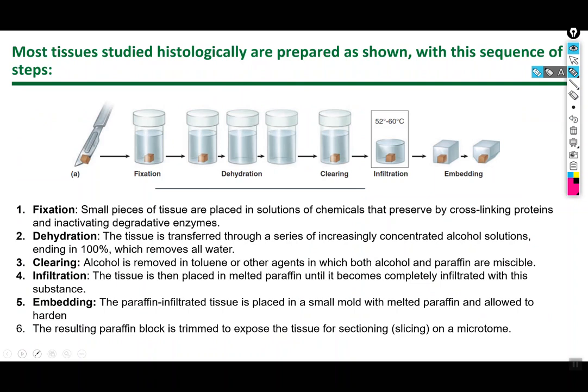To get a histological image, you can't just pull a chunk of tissue out, slice it thin, and put it on a slide — you have to do some steps first. The first step after collection is fixation: you make sure the tissue won't physically or chemically degrade due to lysosomal enzymes already in the tissue. This is done by cross-linking proteins, which preserves structural integrity and inactivates enzymes simultaneously, typically using formalin or another cross-linking preservative.